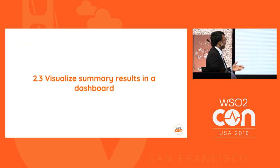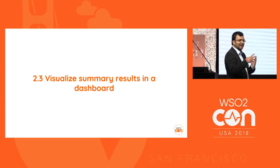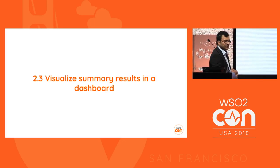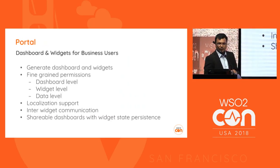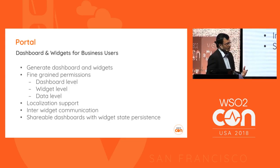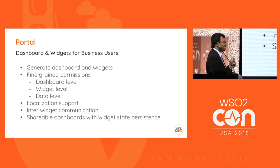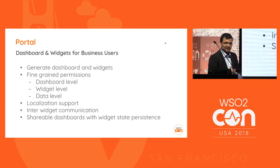To summarize: we got raw material information, showed how to store it in an event table, then aggregated over longer time periods and stored that too. To visualize summary information in the dashboard, you can use the dashboard capability in stream processor. It allows you to generate dashboards and widgets, provides fine-grained permissions at dashboard, widget, and data levels, and supports PubSub approaches where you can interconnect two gadgets - based on a selection in one gadget, changes appear in another.